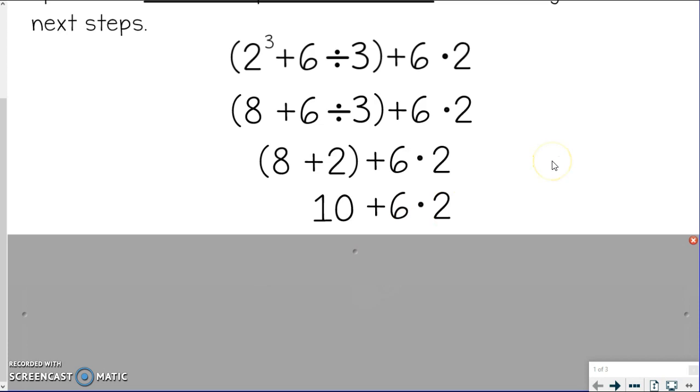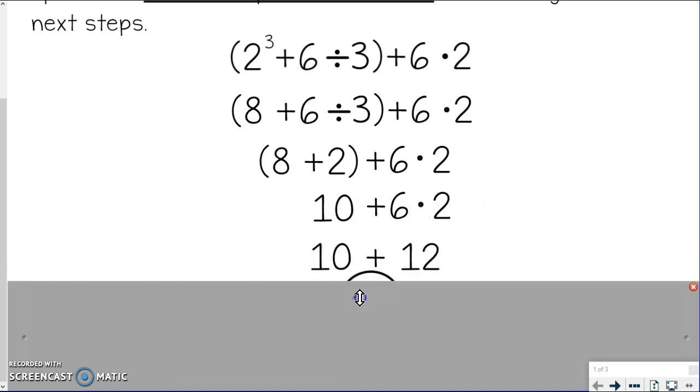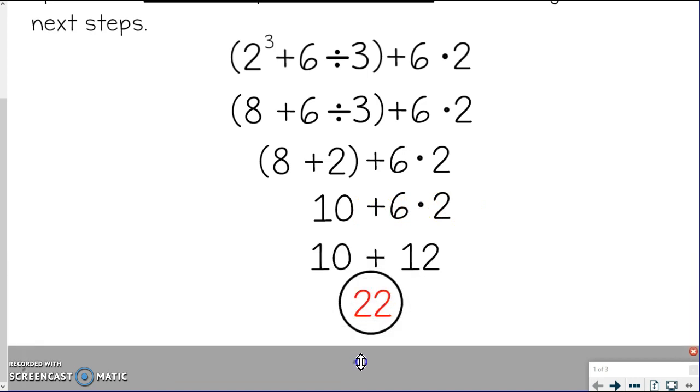And so now I can stop writing the parentheses because I've done everything in there and I followed it in order. So after simplifying everything in parentheses, we end up with 10. So now I've got addition versus multiplication. So I'm going to do multiplication first, which is 6 times 2 to get 12.